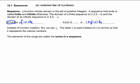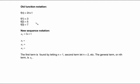The idea is that a sequence is a function whose domain is the set of positive integers. With old function notation, making up a function f of n equals 2n plus 1. The numbers 3, 5, 7 are obtained by doing f of 1, f of 2, f of 3. Plugging 1 in: 2 times 1 is 2, plus 1 is 3. Plug 2 in: 2 times 2 is 4, plus 1 is 5, and so on. This generates the sequence 3, 5, 7.